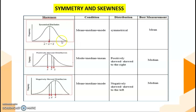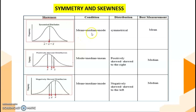Here, we have three types of skewness. The first one: if we have median equals to mode equals to mean, then the distribution we call it symmetrical.